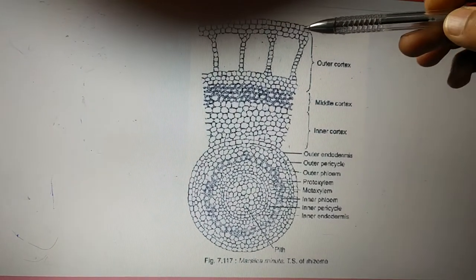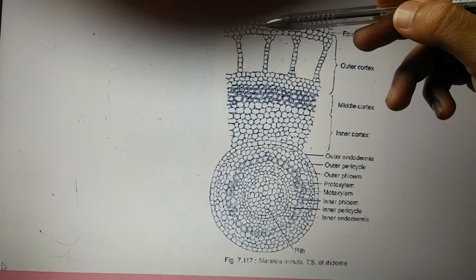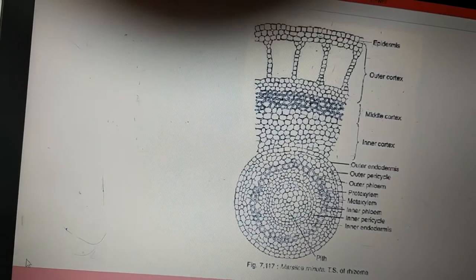To begin with, the outermost layer is the epidermis and it is composed of compactly arranged thick cells. There is absence of stomata, these are devoid of stomata.